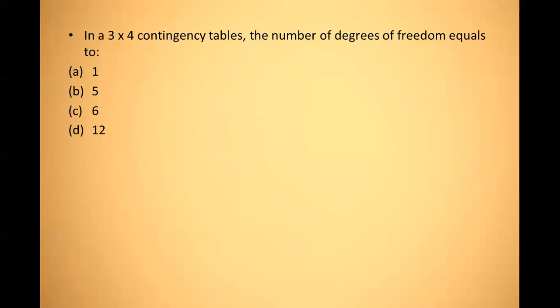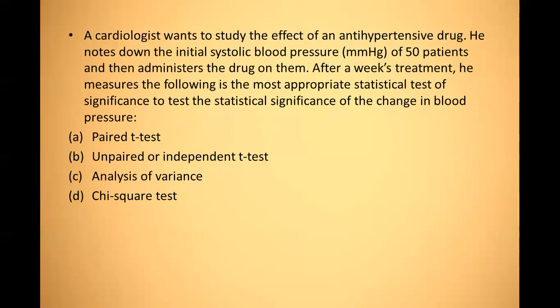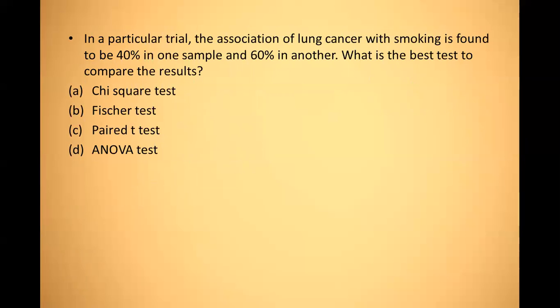A cardiologist wants to study the effect of an antihypertensive drug. He notes down the initial systolic blood pressure for 50 patients, administers the drug, and after one week measures BP again. What is the most appropriate statistical test of significance? Since the same individuals are measured before and after intervention, the paired t-test is the most appropriate.